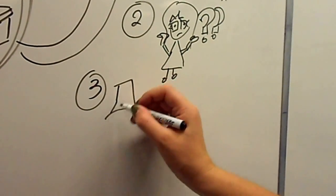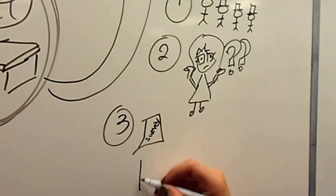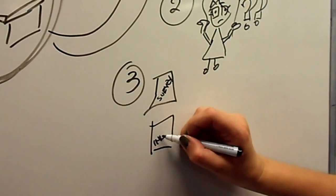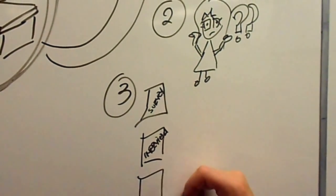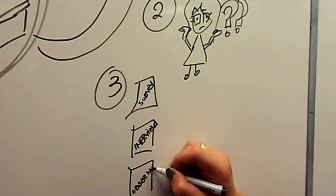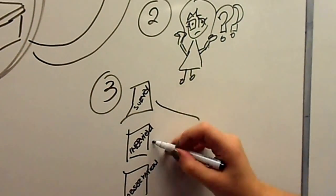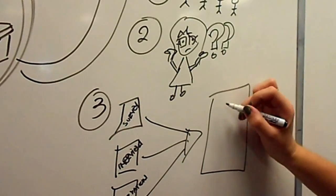The third P stands for program. You can evaluate the effectiveness of a program. For example, for sustainable design, you could look at LEED green building strategies.